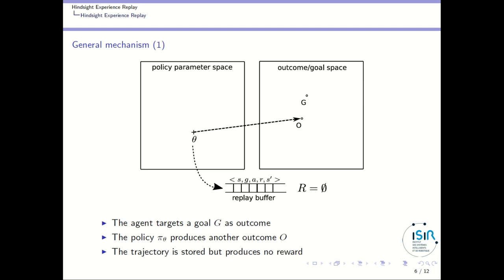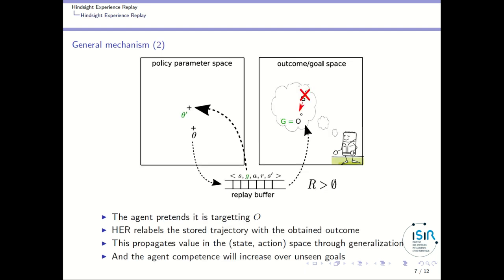The agent can do something with such information. The idea is that the agent may pretend in its mind that it was actually targeting the outcome it obtained. This consists of relabeling the stored trajectory in the replay buffer with the obtained outcome. In that case, what you obtained was the outcome you were targeting, so you get positive rewards. By training on this replay buffer with positive rewards, value propagates in your state-action-goal space through generalization, and the agent's competence increases over unseen goals.